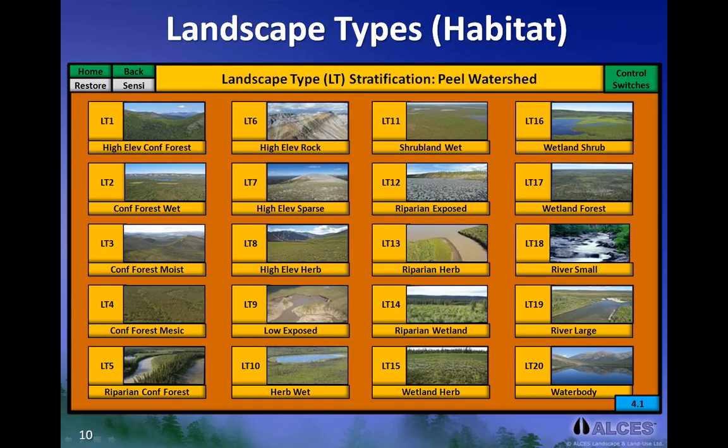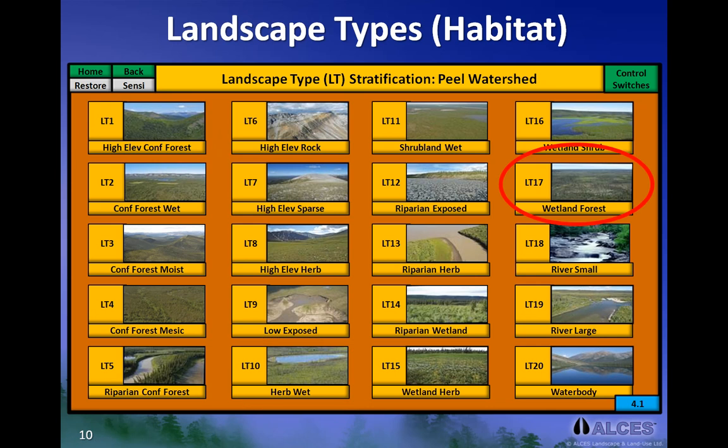This figure shows the 20 general landscape types within our study area. For example, you can see representative pictures of high elevation coniferous forests, herbaceous wetland, wetland forests, and large rivers.